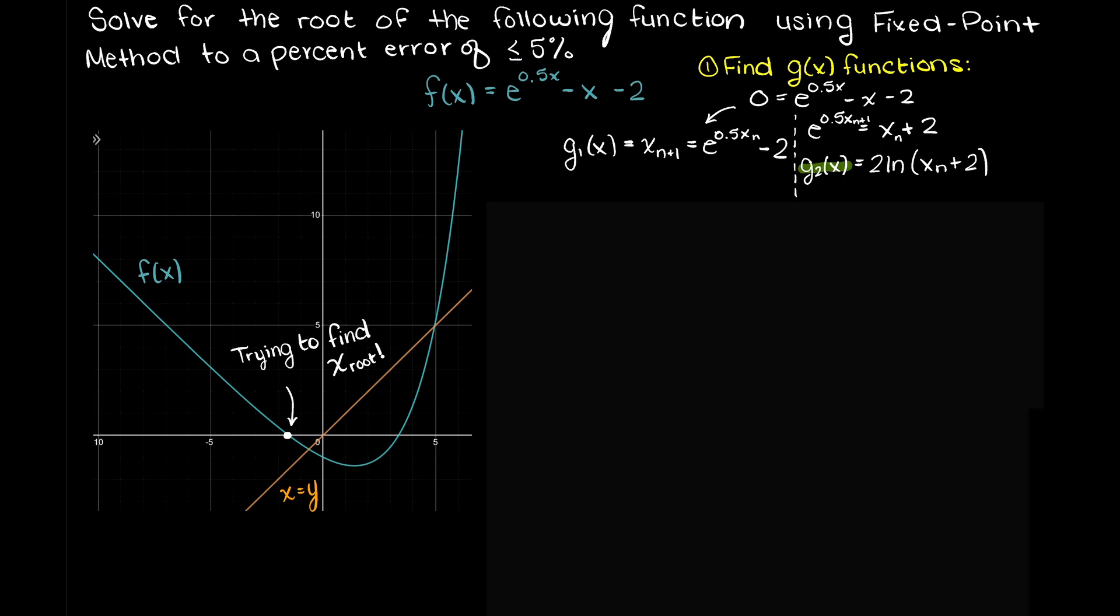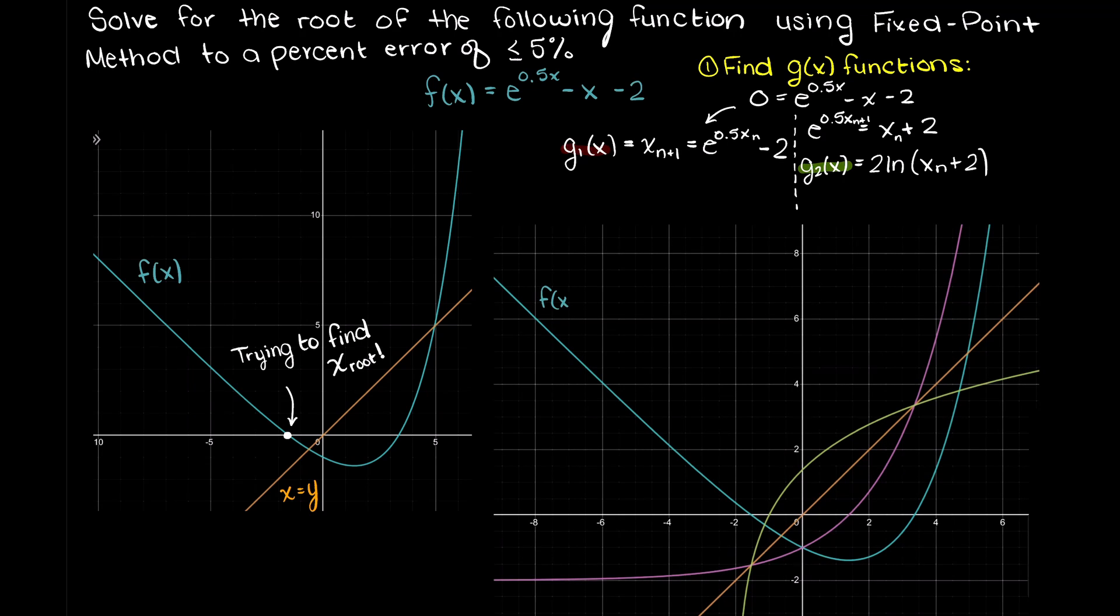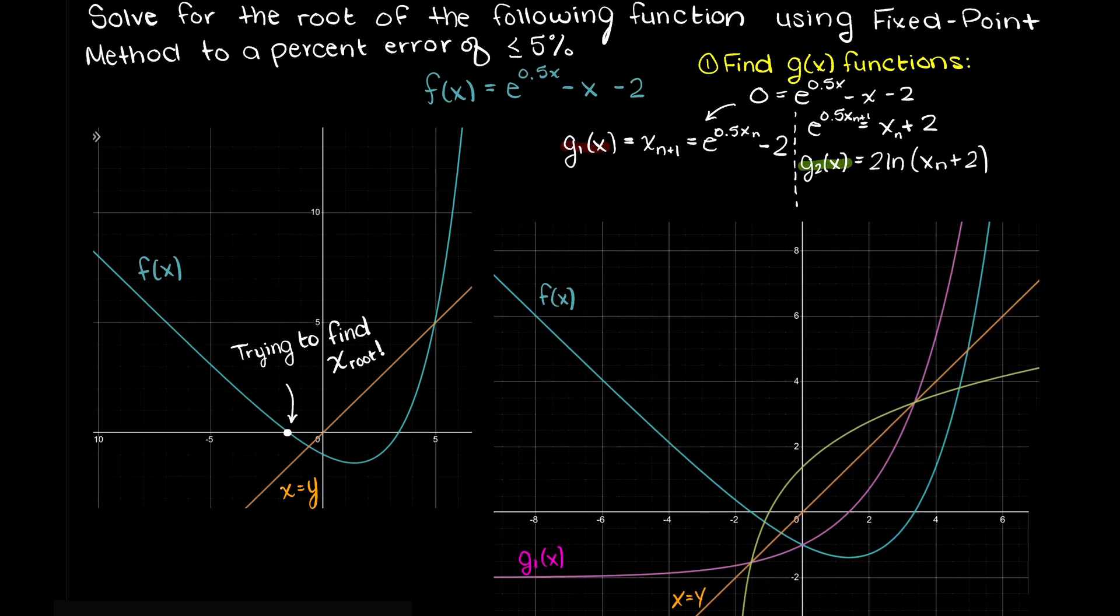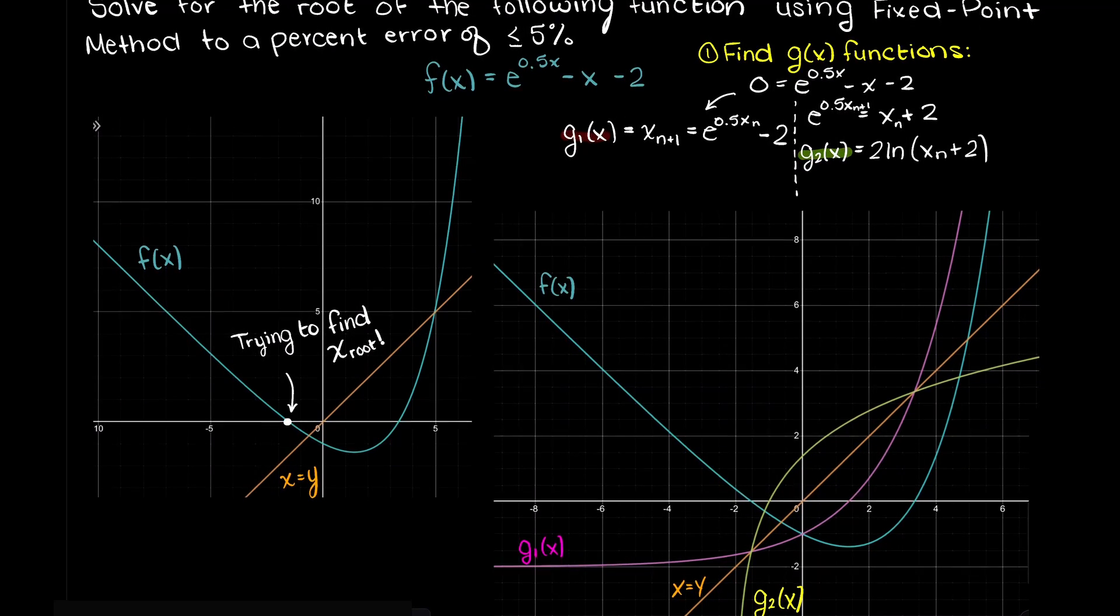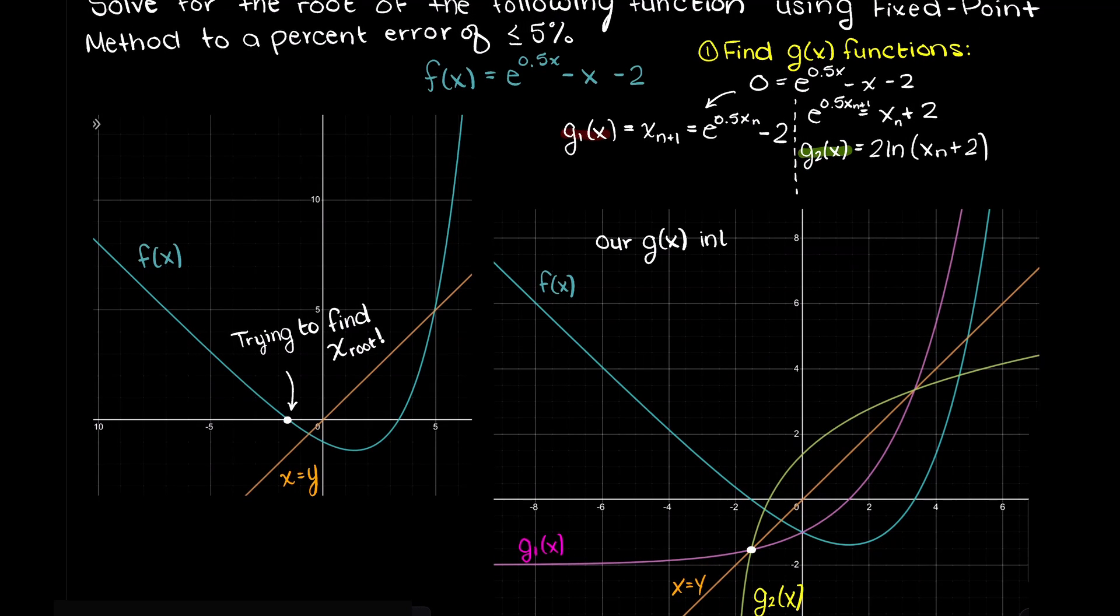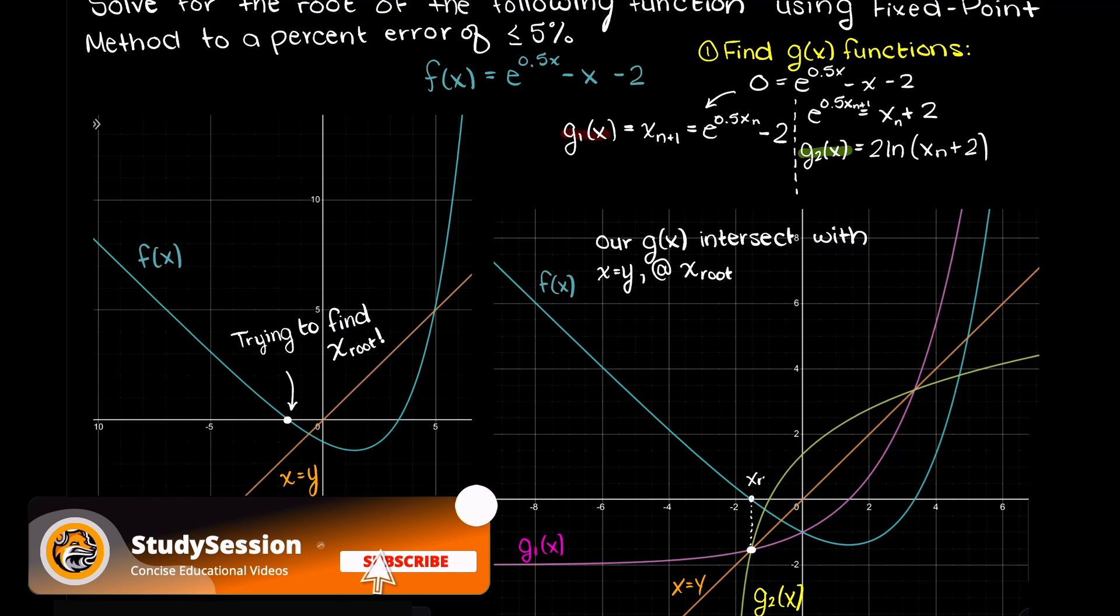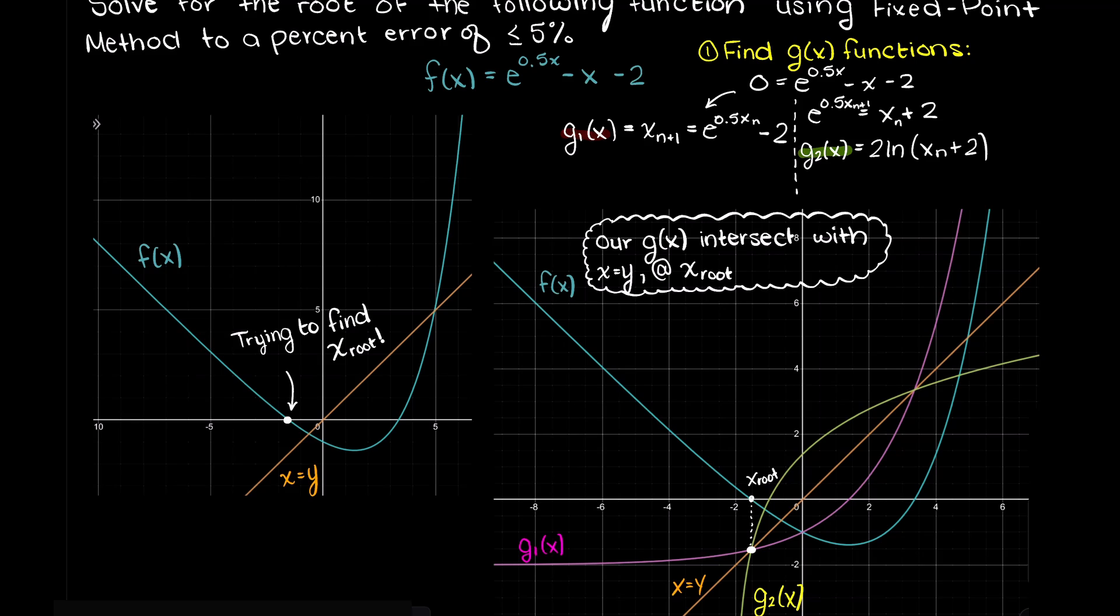So, let's just plot g1 and g2 on our graph here. In the fixed point method, the fixed point is directly above our root of interest, which our g functions intersect with a line where our input equals our output. Now, we can choose either equation here to begin solving.